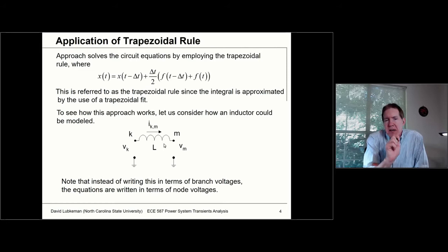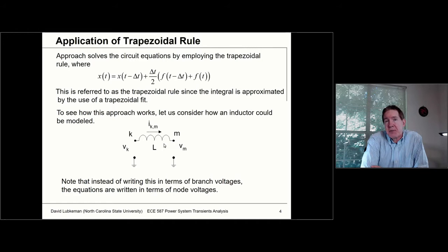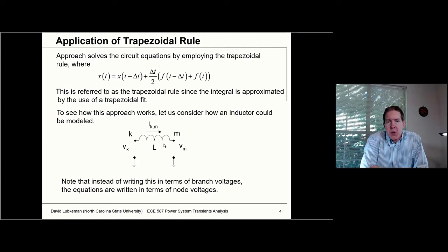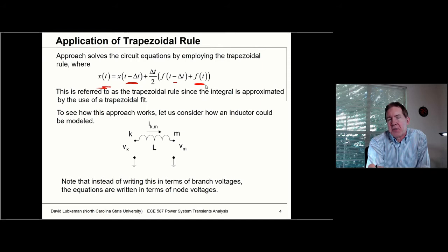What EMTP does is it's based on the trapezoidal rule approximation for solving differential equations. Remember, when we have the Runge-Kutta rule, we had K1, K2, K3, and K4, where K1 is based on what's happening at the initial time and K4 is based on the derivative at the next time step. The trapezoidal rule is sort of between the Euler approach and the Runge-Kutta approach. With the trapezoidal rule, if you have an initial value at time t minus delta t and you want the value x at time t, you take one half of the derivative at t minus delta t, add to that one half of the derivative at time t, and multiply by delta t.